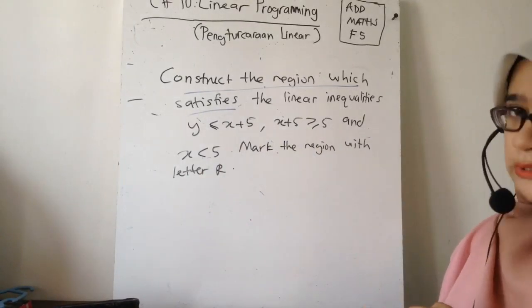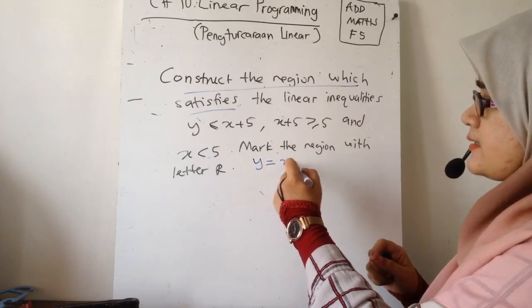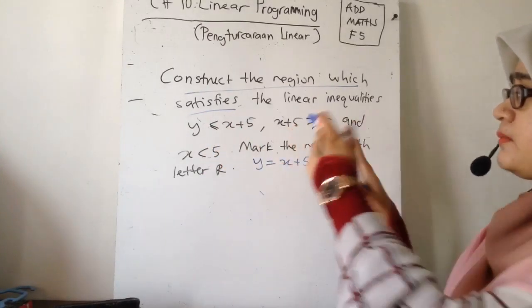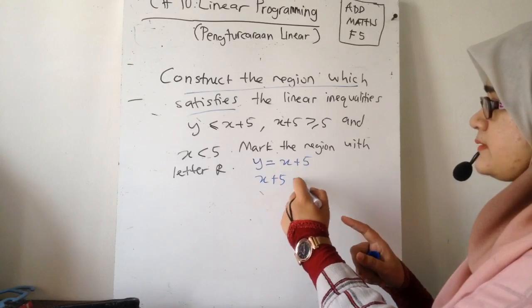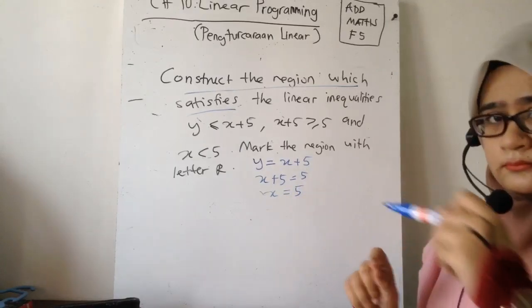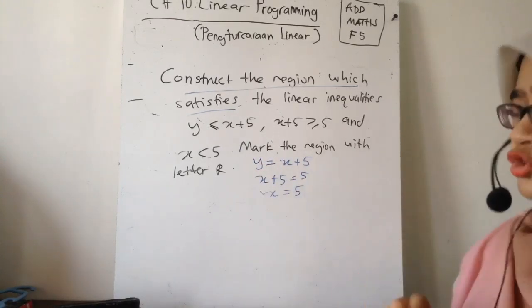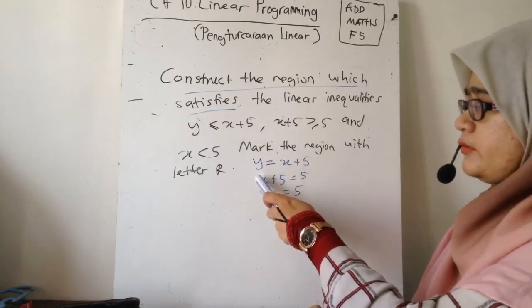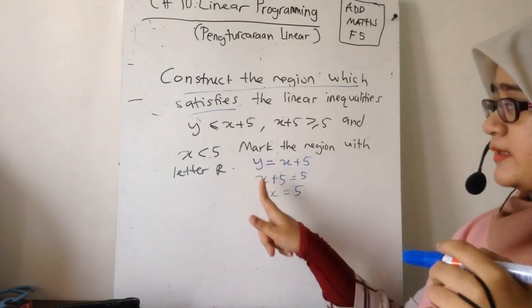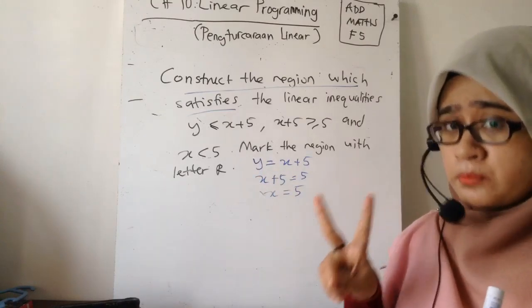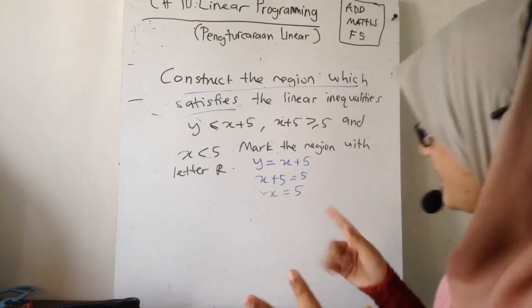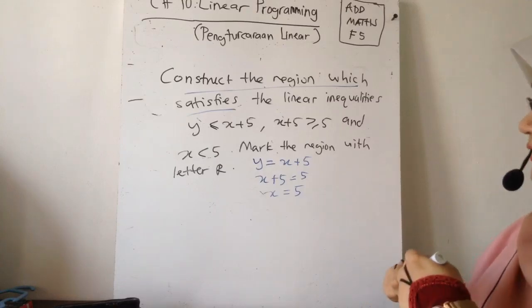Untuk lukis, kita kena buat graph sebab dia kata construct the region which satisfy. Dia suruh kita buat equality tiga ni, then kita buat graph, then kita loretkan yang mana yang satisfy - yang memenuhi syarat yang dia letak tiga ni. First untuk lukis, kita kena ada lukisan Y sama dengan X tambah 5. Kita lukis dulu line yang biasa. Yang ni pula, kita akan lukis X tambah Y sama dengan 5. And then yang ketiga, X sama dengan 5. Kita akan lukis tiga line ni dulu.